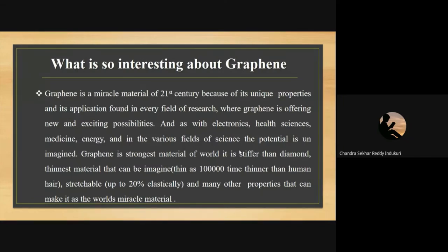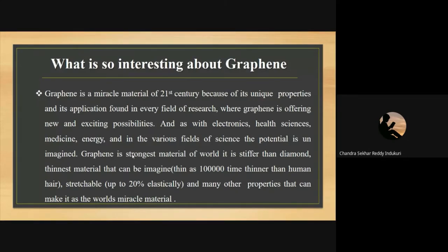Graphene is becoming a miracle material in the 21st century because of its unique properties with applications found in every field — health sciences, medicine, energy, and various fields of science. The potential is unimagined. Graphene is the strongest material in the world, stiffer than diamond, and the thinnest material imaginable — 100,000 times thinner than human hair. It is stretchable up to 20% elastically and has many other properties that make it a world miracle material.